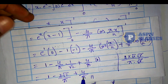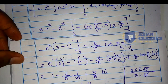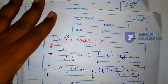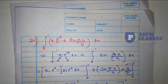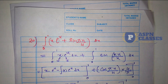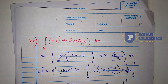So you understand, this is the last answer. Exercise 7.9 examples are now complete. In the next class, we will do exercise 7.10. Students, keep watching.